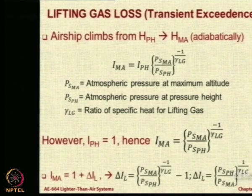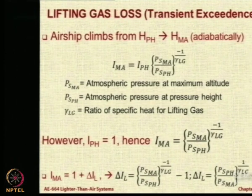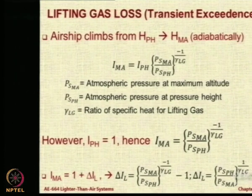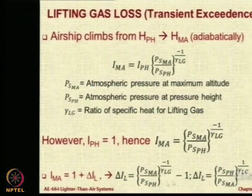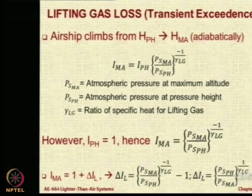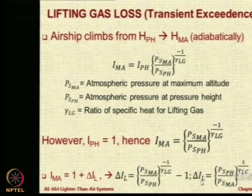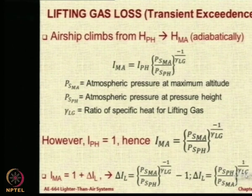Now I_MA is basically equal to 1 plus delta I_L. So delta I_L can be back-calculated as (P_s_PH / P_s_MA)^(1/gamma_LG) minus 1. Here the minus sign has been handled by inverting the ratio — P_s_MA is in the denominator, P_s_PH is in the numerator. So the expression you get finally is: the additional inflation fraction delta I_L equals the ratio of pressures (P_s_PH / P_s_MA) to the power 1 by gamma_LG, minus 1.